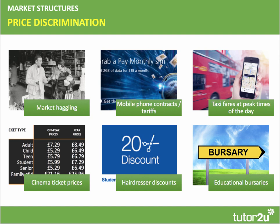Schools may offer free places and universities free places through bursary schemes — again a form of price discrimination. Hairdressers might offer a discount based on age; students and OAPs might get a discount off their hairdressing fee.